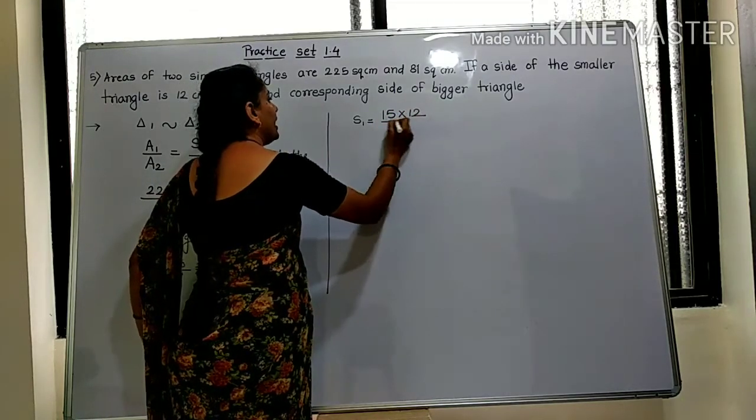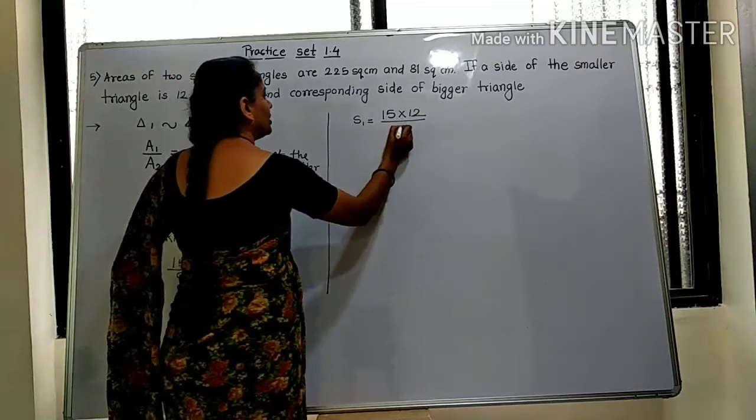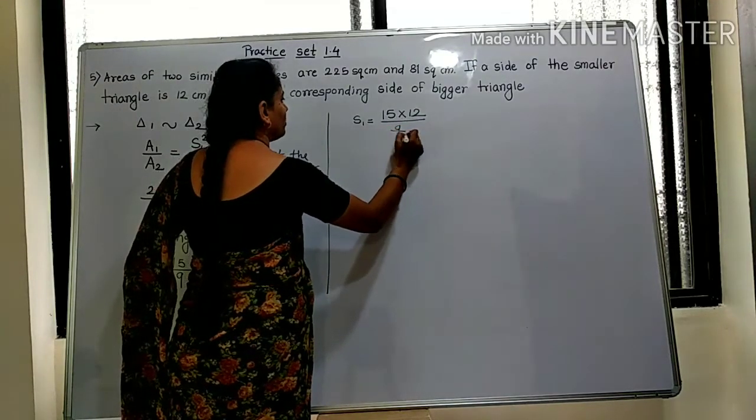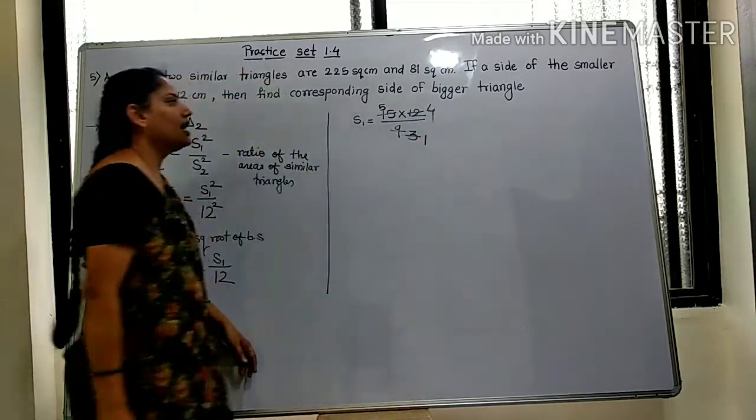and divide by 9. So 3 times 3 is 9, 5 times 3 is 15, 5 times 12...